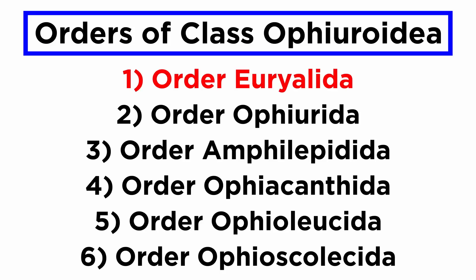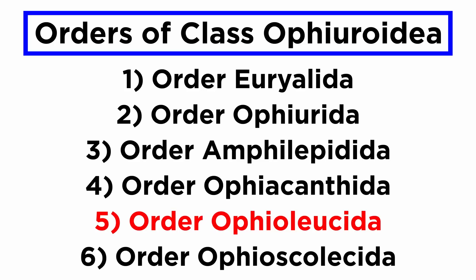The extant members of class Ophiuroidea are split up into six extant orders: Urialida, Ophiurida, Amphilepidida, Ophiocanthida, Ophiolucida, and Ophioscolicida.